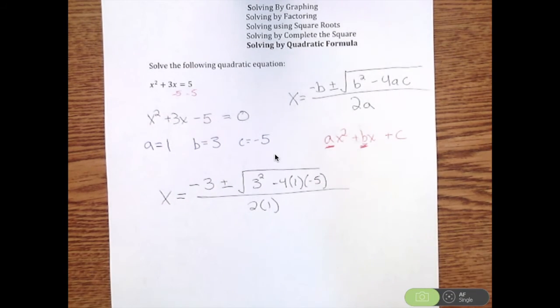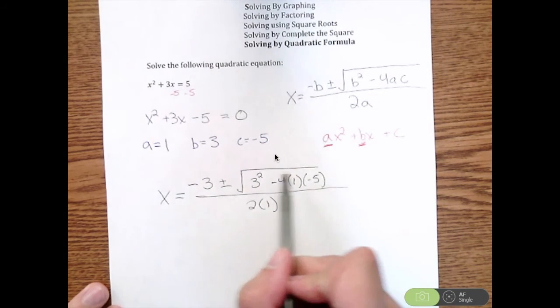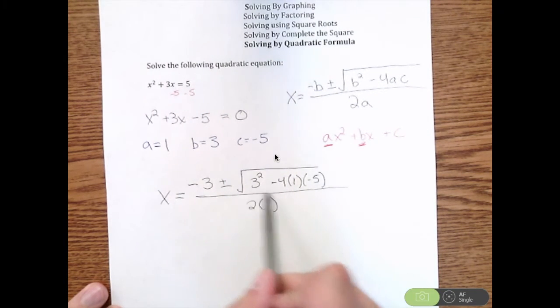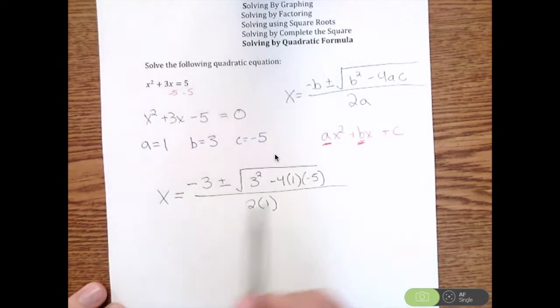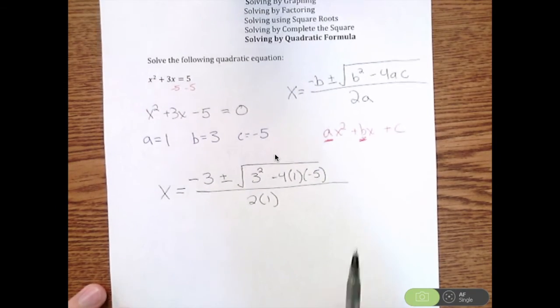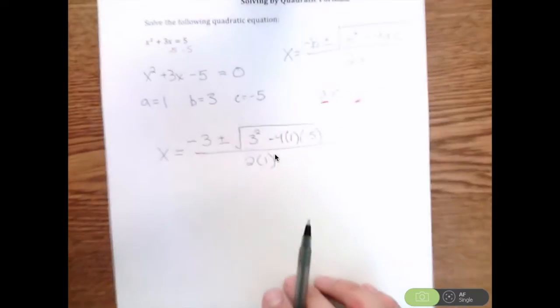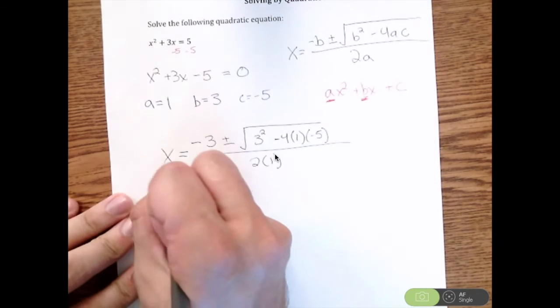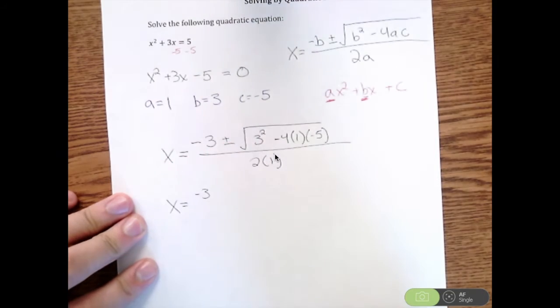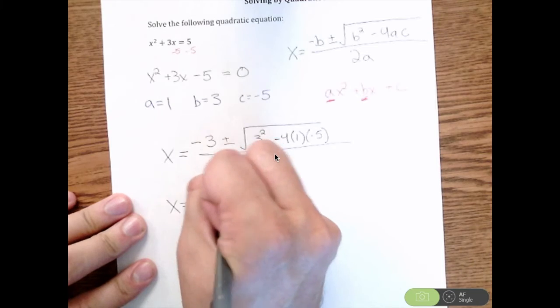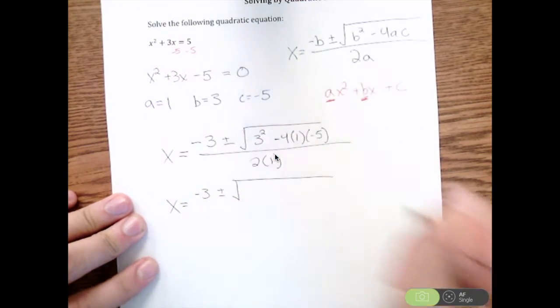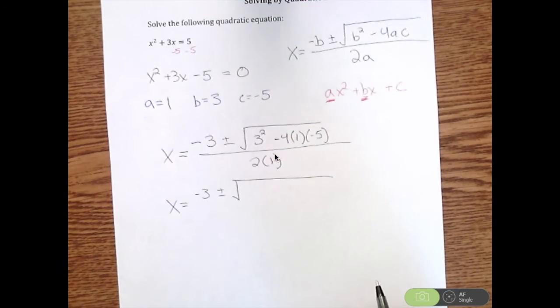When I work through these problems, I like to work on the inside and work my way out, meaning I like to start inside the square root and work my way out. So I'm still going to have x equals negative 3 plus or minus. But inside that square root, I'm going to address these pieces.